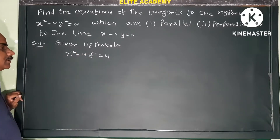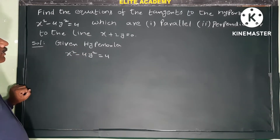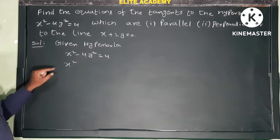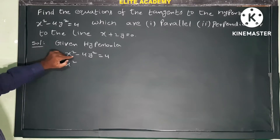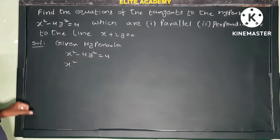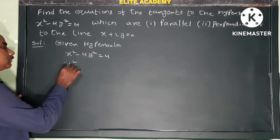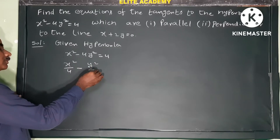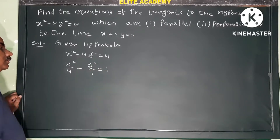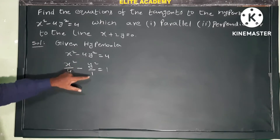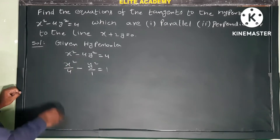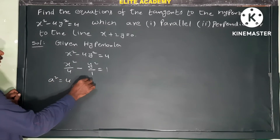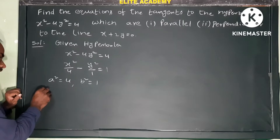Given hyperbola: x squared minus 4y squared equals 4. To convert to standard form, divide the entire equation by 4. So x squared by 4 minus 4y squared by 4 gives us x squared by 4 minus y squared by 1 equals 1. Therefore a squared equals 4 and b squared equals 1.